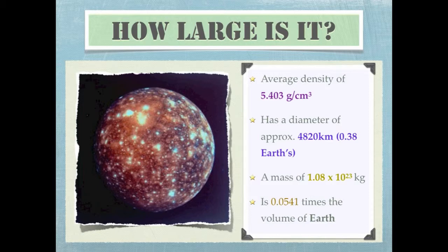Additionally, Callisto's volume is 0.0541 times the volume of Earth. The picture located on the right hand side is a false color image of Callisto. The parts of Callisto that are dark violet in color represent the most heavily cratered portions of the moon's surface, and the red represents the portions that are the least cratered.